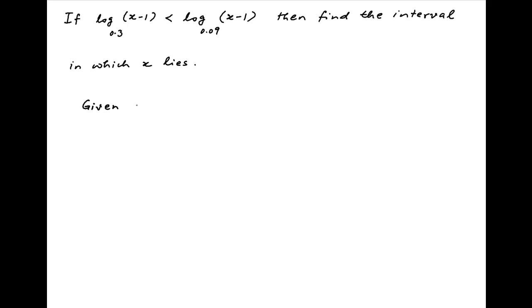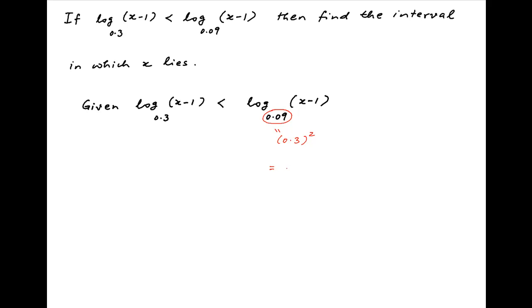We are given that log of (x minus 1) to the base 0.3 is less than log of (x minus 1) to the base 0.09. Notice that on the right hand side the base 0.09 is the square of 0.3, and therefore the right hand side can be written as log of (x minus 1) to the base 0.3 squared.